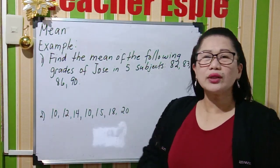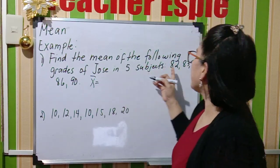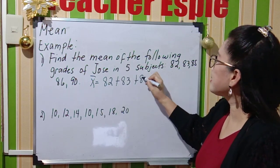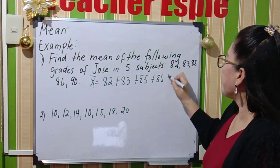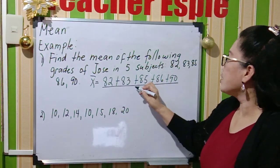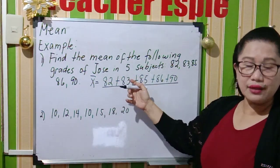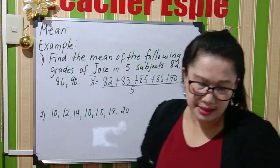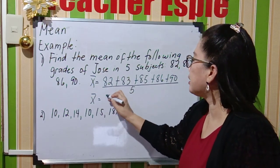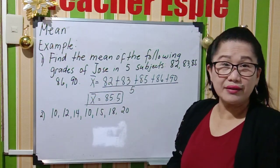So what we are going to do is add all of the numbers. There are five subjects, so 82 plus 83 plus 85 plus 86 plus 90, divided by 5. In your calculator, add those values divided by 5 and it will give you the mean of 85.5. So this is now the mean grade of Jose.